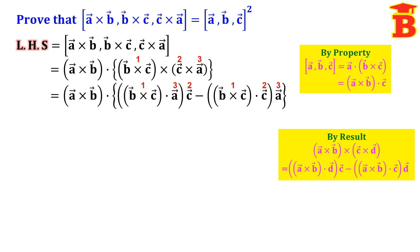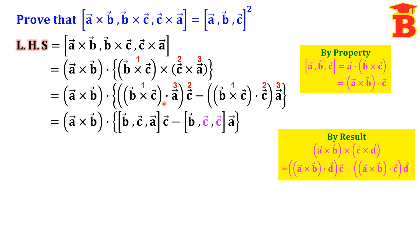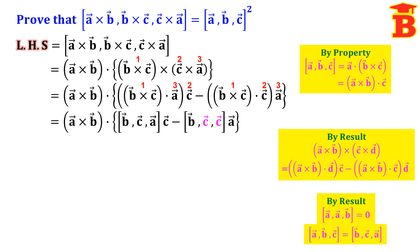Now in the next step, this bracket has one cross and one dot, so we can write it as box of (B, C, A) into C vector, minus — this bracket also has one cross and one dot — box of (B, C, C) into A vector. In this box product we have two same vectors, C and C, so that is 0. If two vectors in a box product are the same, the answer is 0.